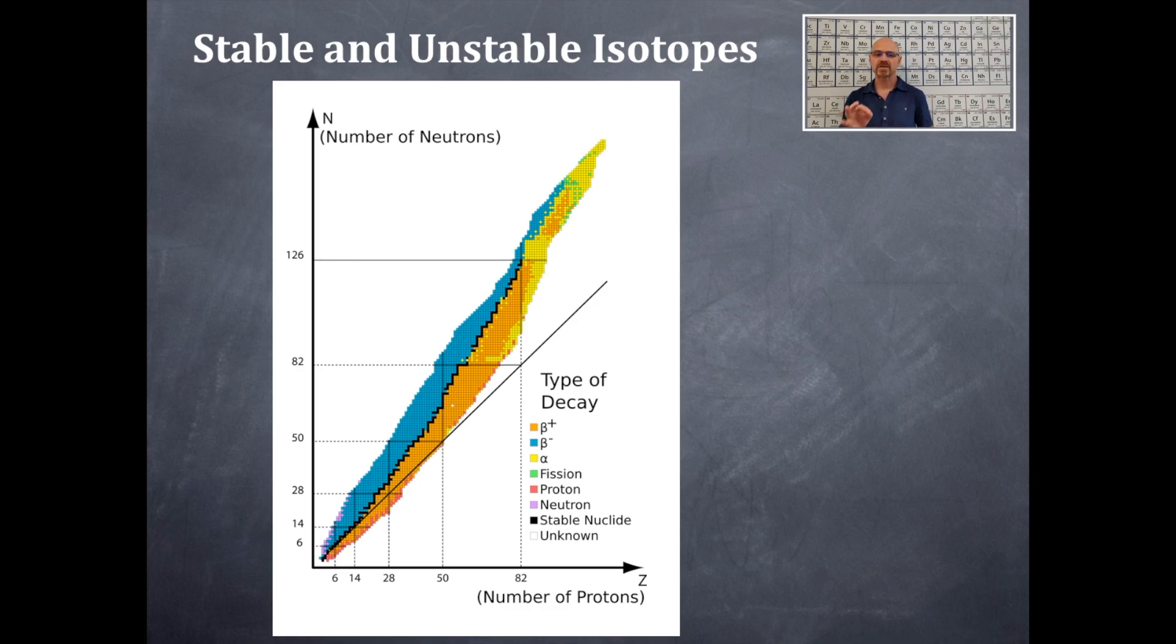But you should see the orange are positron emissions. That's to the right or down of that line of stability. And then, to the left of that are beta emissions. Alpha particle emissions are in the yellow, and that's generally at the top of this.